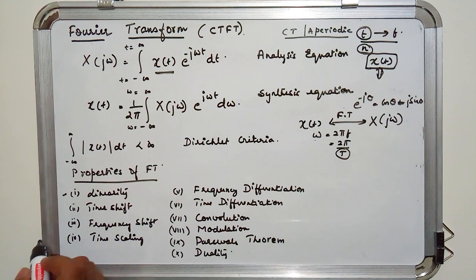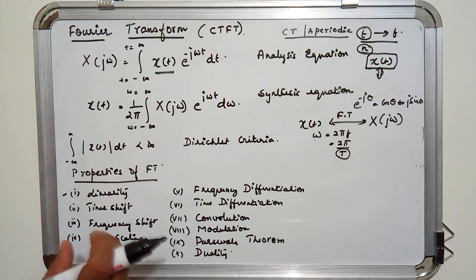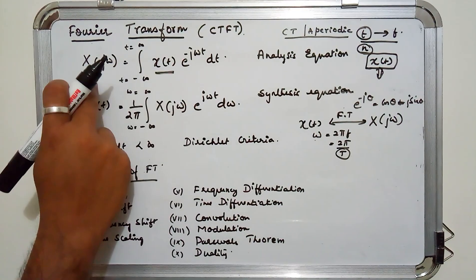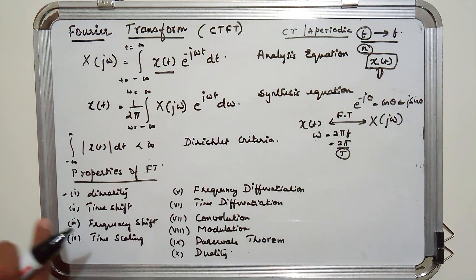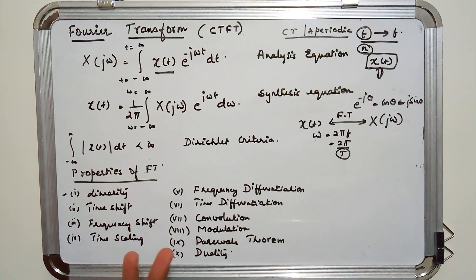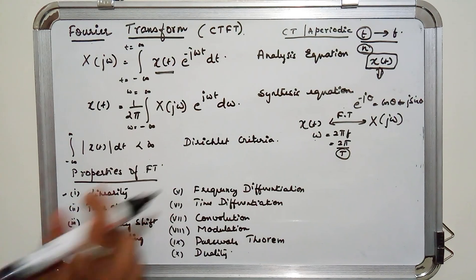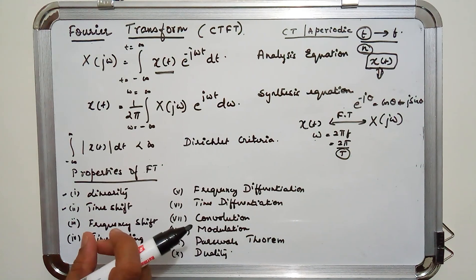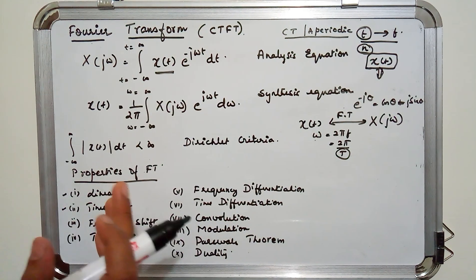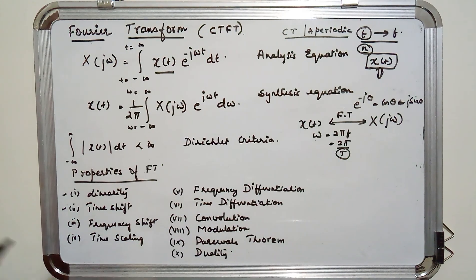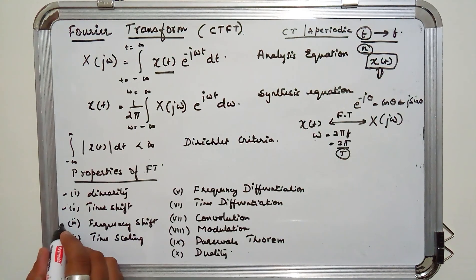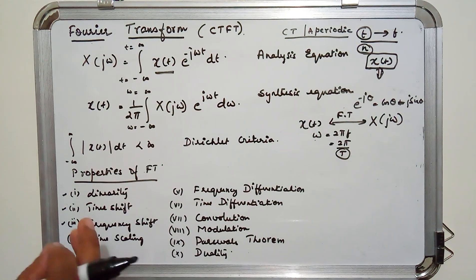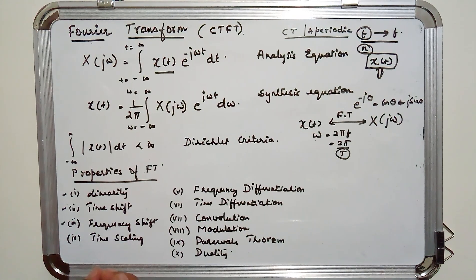The first property is linearity: if the input is a weighted sum of two or more signals, the Fourier transform of that sum equals the weighted sum of the individual Fourier transforms. The time shift property says that a shift in the input signal produces a corresponding change in the frequency domain signal. Frequency shift says that if you multiply your input by a complex exponential, you get a frequency shift at the output. Time scaling means you scale your input by some factor — covering expansion and compression.